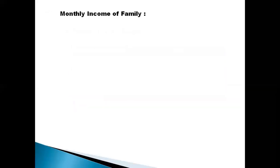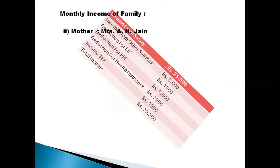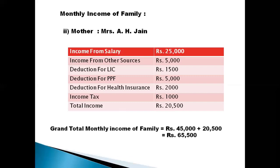The second earning person in the family is the mother, Mrs. EHG. She also has income from salary and other sources, along with different savings. Deductions include LIC, PPF, health insurance, and income tax. Her total income comes to Rs. 20,500. So the grand total monthly income of the family is Rs. 45,000 (father) plus Rs. 20,500 (mother), which equals Rs. 65,500 as the total family income.